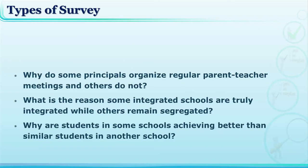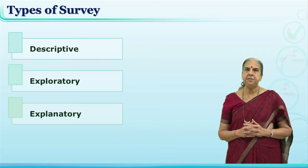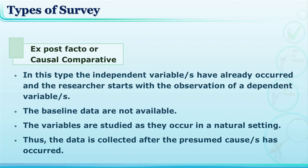Now look at these questions: Why do some principals organize regular parent-teacher meetings and others do not? What is the reason some integrated schools are truly integrated while others remain segregated? Why are students in some schools achieving better than similar students in another school? These research questions are asking for some type of reason — they seek explanation — and therefore these are termed as explanatory surveys. On the basis of the research question, we have identified three types: descriptive, exploratory, and explanatory. One type of explanatory survey is also termed as ex post facto or causal comparative.